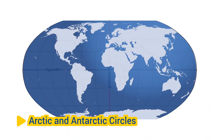Arctic and Antarctic Circles: The Arctic Circle and the Antarctic Circle are imaginary lines located at approximately 66.5 degrees north and south latitude, respectively. These lines mark the northernmost and southernmost points where the Sun can appear above or below the horizon for 24 hours during the summer and winter solstices.